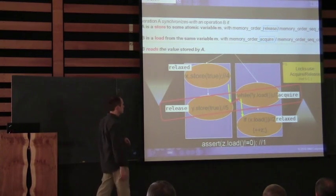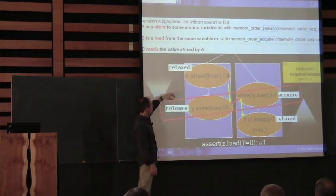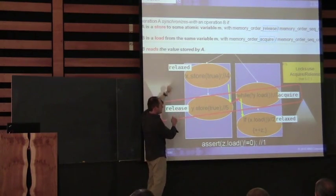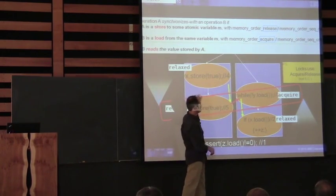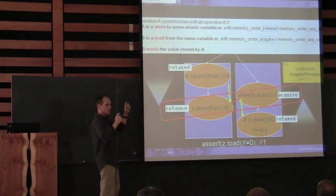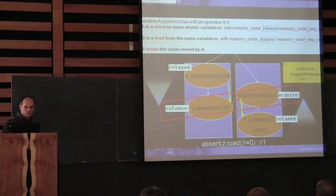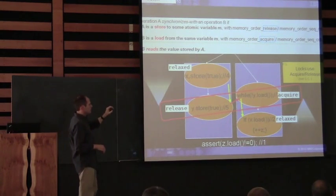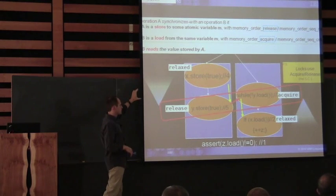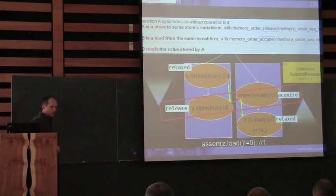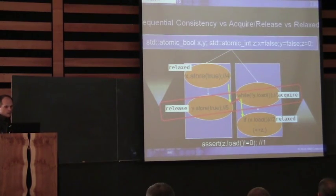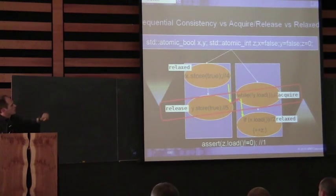Locks use acquire-release, not sequential consistency. If you had a big lock around this and unlocked it, and then this guy grabs the lock to read X — that's all you need to ensure that things inside your locks are seen by the next guy who grabs the lock. It does mean that just because you put a lock around something here doesn't mean the other guy will ever see it — he needs the same lock. You've got to have that common ground between the two of them.